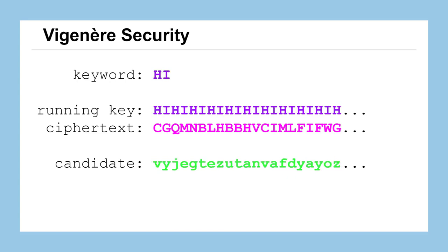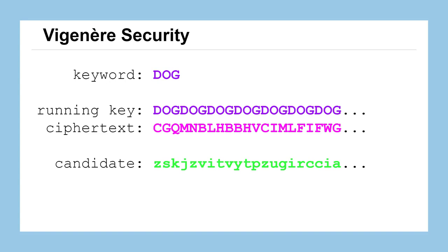Maybe we try a different two-letter keyword, like 'hi'. We create our running key, decipher the ciphertext, and that's not a candidate either. We try all of our two-letter keywords and none of them are looking right. So we jump up to a three-letter keyword, try something like 'ABC', that's not it. Maybe we try 'dog'. We try all of our three-letter keywords but they aren't it either. Let's pause before we go on to four-letter keywords and figure out how many we've tried.